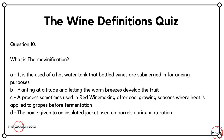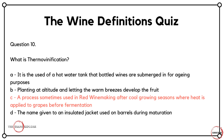Finally, question ten — we're going to end on another one of these scientific type words. What is thermo-vinification? Is it A, the use of a hot water tank that bottled wines are submerged in for ageing purposes? Is it B, planting at altitude and letting warm breezes develop the fruit? Is it C, a process sometimes used in red winemaking after cool growing seasons where heat is applied to the grapes before fermentation? Or is it D, the name given to an insulated jacket used on barrels during maturation? The correct answer is C — it's a process where there's been a cool growing season and those black grape berries haven't done exactly what the winemaker wants, so they use a little bit of heat on those berries before fermentation.